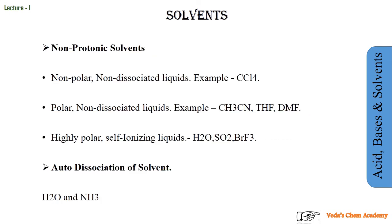Now we move to non-protonic solvents — they don't possess a proton. The first example is non-polar, non-dissociated liquids. Non-polar means they have zero dipole moment — the example is CCl4. In CCl4 there is no such proton, so the solvent is non-polar. Non-dissociated means the liquid does not undergo dissociation the way H2O gives H⁺ and OH⁻.